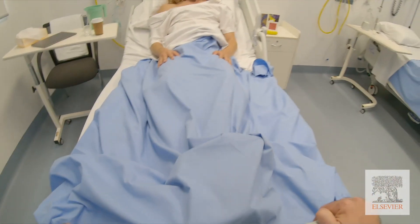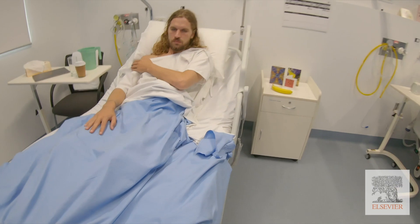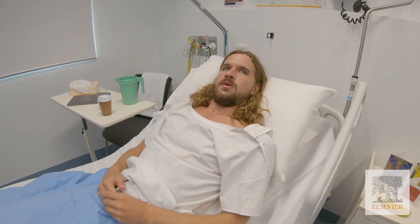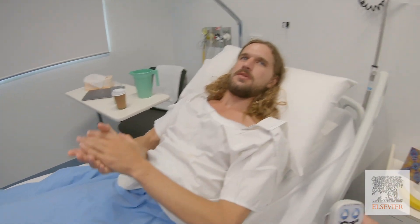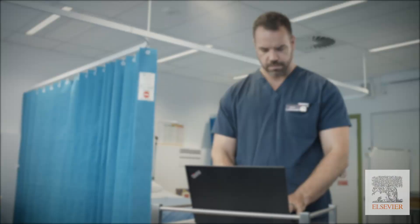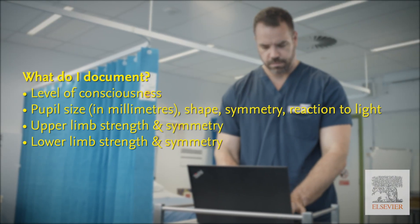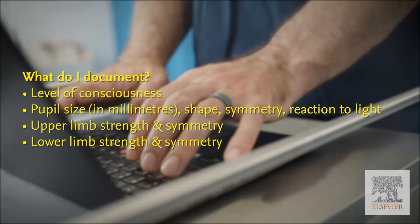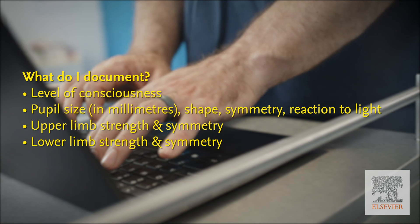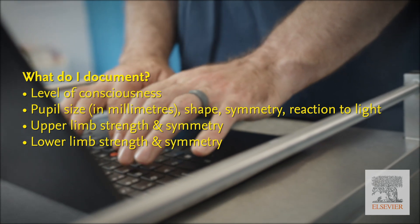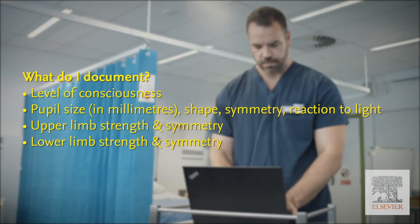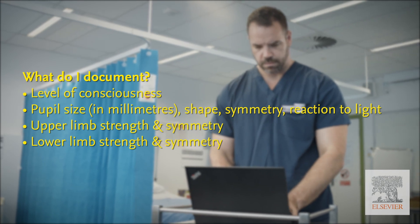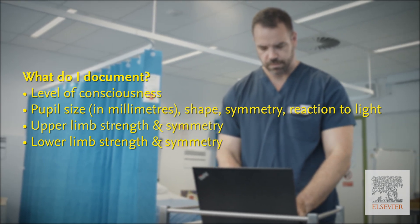I'll let you get back to sleep now. Is there anything I can get for you at the moment? Record the person's level of consciousness, pupil reaction for each eye, and pupil size in millimetres, as well as the person's muscle power and symmetry on the appropriate chart. Make a note of anything you identified in your general inspection.